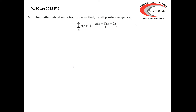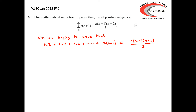For our first example, we look at the January 2012 paper, where we are asked to prove the sum of a series using mathematical induction. When dealing with a sum of a series expressed in sigma notation, it can often be a good idea to remove the sigma notation shorthand. So what we're trying to prove is that 1×2 + 2×3 + 3×4 + ... + n(n+1) equals n(n+1)(n+2) over 3.